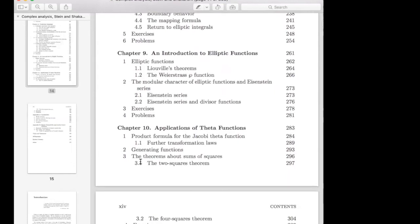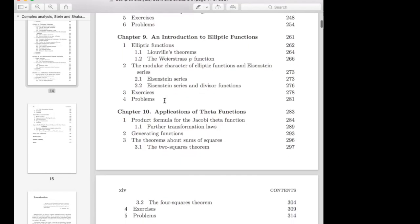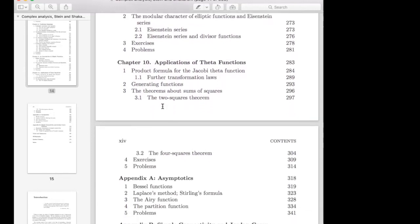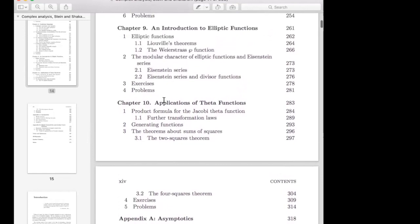And then the last two chapters of this book are directed towards number theory. There's a much more extensive chapter on elliptic functions than in Greene and Krantz, including Eisenstein series and some applications to number theory of the theta function, including these theorems about which numbers are representable as two squares or four squares. That's really nice stuff. If you know that you want to do number theory, then this is definitely the complex analysis book for you.